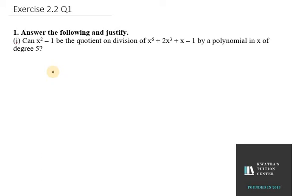Hello everyone, let's start with exercise 2.2, question number 1 of NCERT exemplar. So in this, we need to find the answer for question 1. It says, can x² - 1 be the quotient on division of x⁶ + 2x³ + x - 1 by a polynomial in x of degree 5?